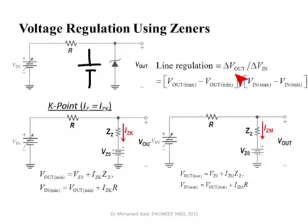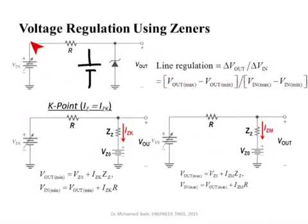Line regulation is the ratio of the change in output voltage to the change in input voltage. The input voltage can go from a minimum to a maximum value — oscillating or any type of change — resulting in a maximum and minimum output value. To calculate line regulation, we first assume we have the minimum input voltage, and we assume the Zener will be at just the start of the breakdown region — at the knee current Izk.